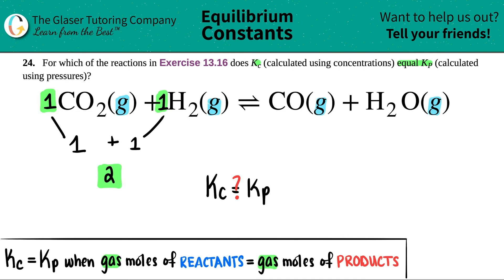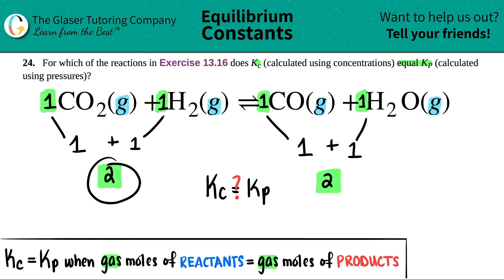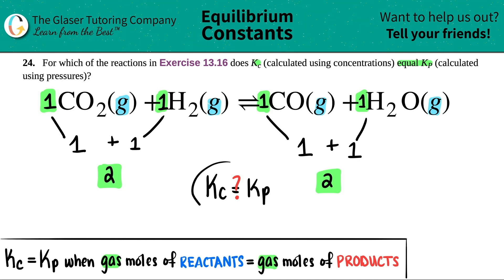Let's do the same thing for the product side. There was nothing in front of CO, so that means I have one mole. And the same thing for H₂O — one mole. So one plus one is two total moles of gas on the product side. I have two total moles of gas on my reactant side and two total moles of gas on my product side. Does Kc equal Kp? Yes, it does, because I have an equal number of moles on the reactant and product sides.